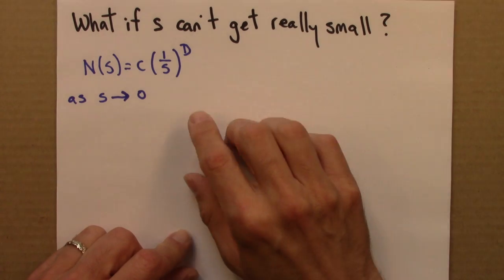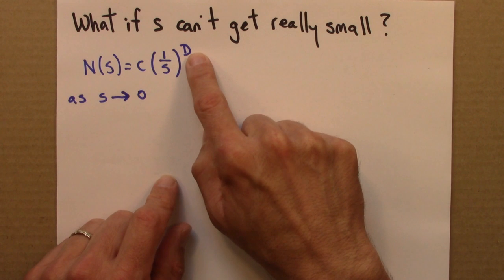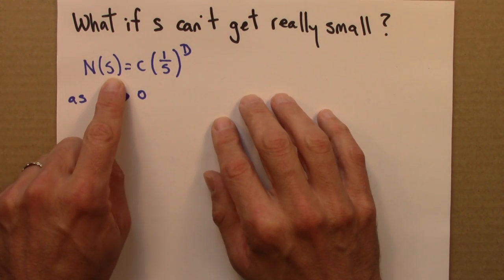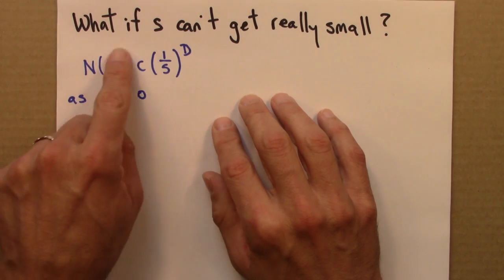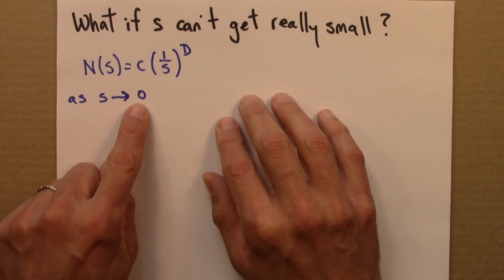We've seen that the box counting dimension is defined by this relationship. Here's the dimension D, this is the number of boxes of side S, and C is some constant independent of S. In order to use this, we have to let the box size S get really small.